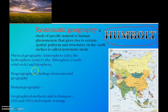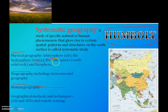Generally, systematic geography is divided into four major branches: first is physical geography, second is biogeography, third is human geography, and the last is geographical methods and techniques. Physical geography describes the earth's systems like the atmosphere, hydrosphere (water), lithosphere, and biosphere.